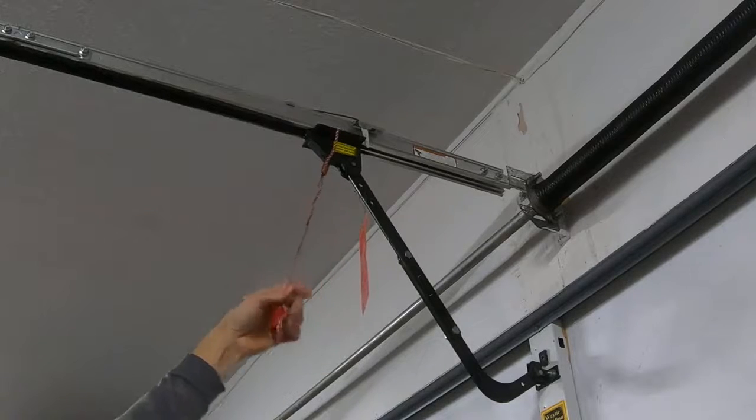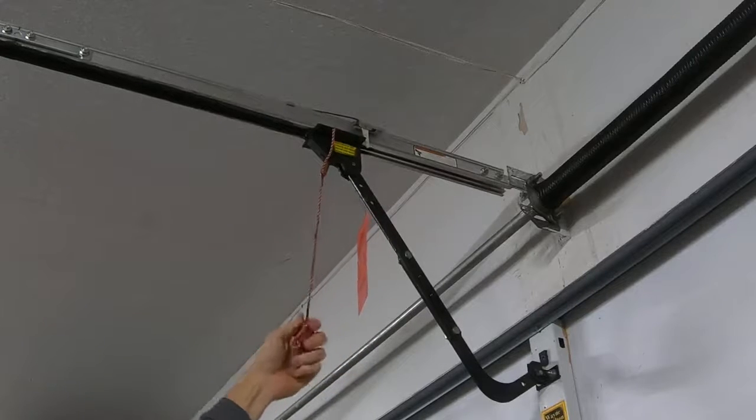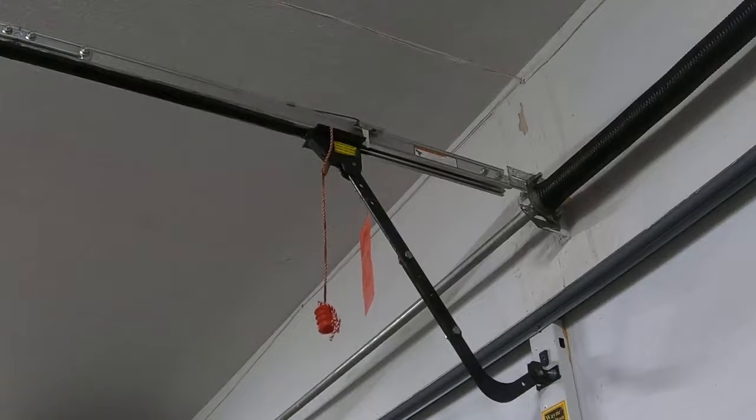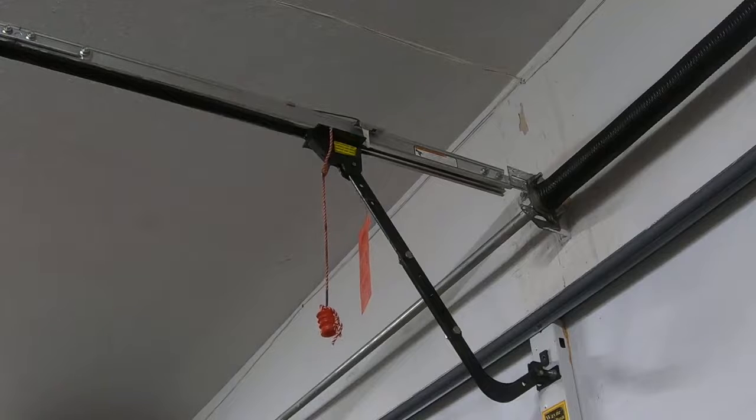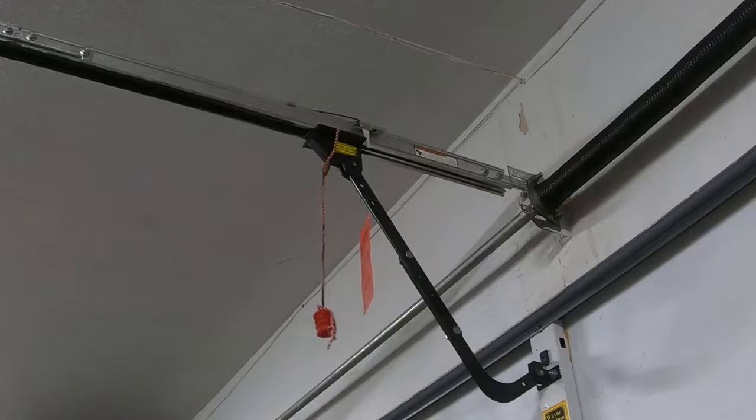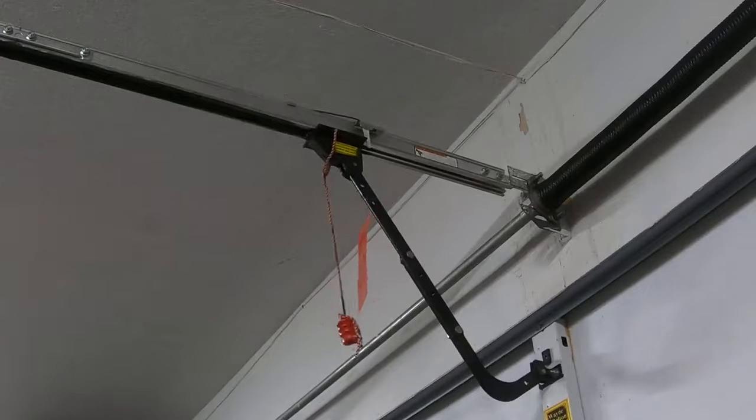Some have a belt, but it works the same way. To disengage it, you just pull this down—that's the emergency release. So if your power is out and you need to get out of your garage, you pull this down and that allows the garage door to be lifted manually.